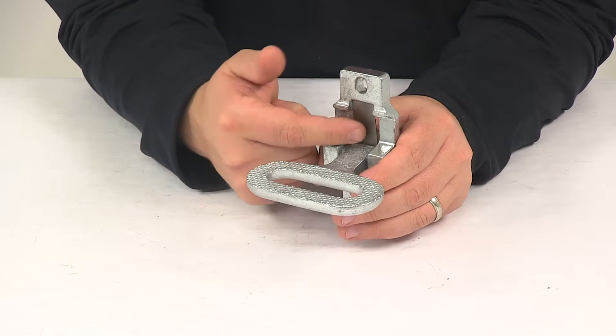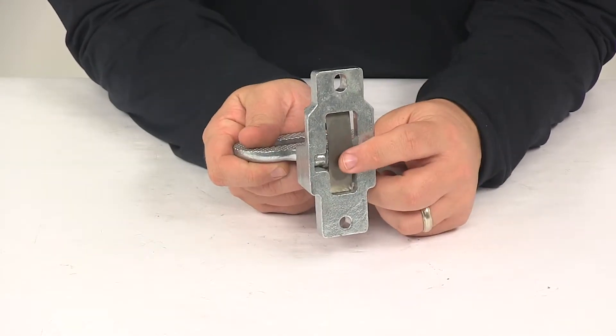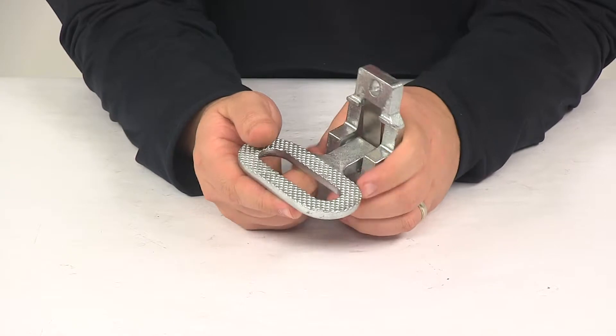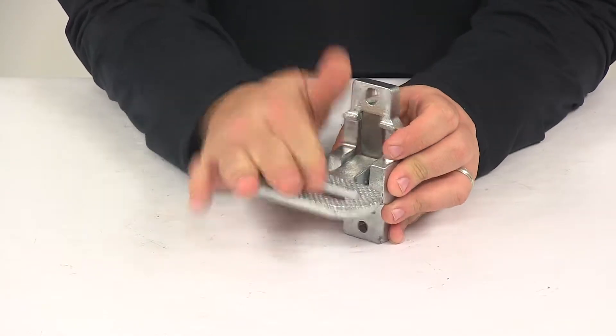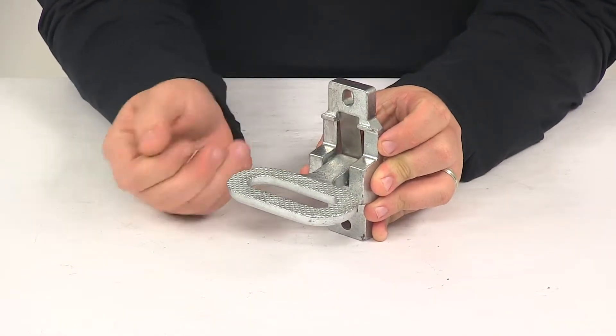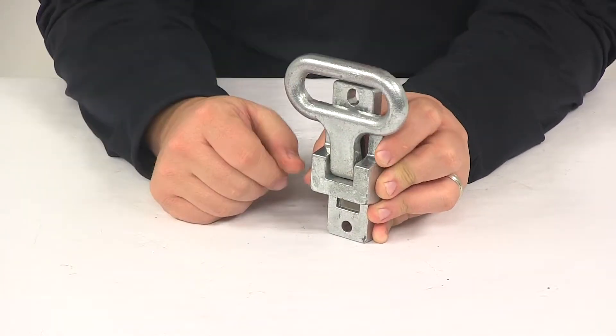It's going to feature this spring located back here. This holds the assist in the open or closed position without rattle. So you just flip it down when you're ready to use it. When you're ready to get it to a stowed position, just flip it up.